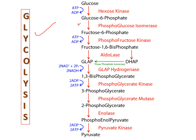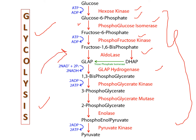For your exam, at minimum you should remember the names of all substrates, products, and enzymes at each step, as well as the ATP-to-ADP and ADP-to-ATP conversions. If you can remember the structures, that will give a good impression to the examiner, but understanding the reactions with the help of structures and writing all reactions in detail is what matters most.